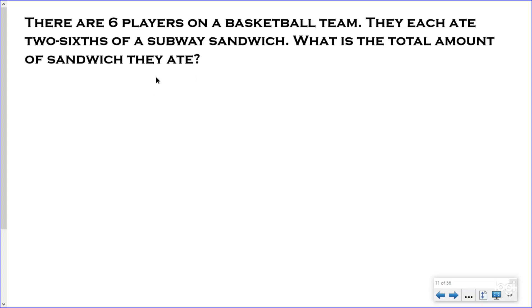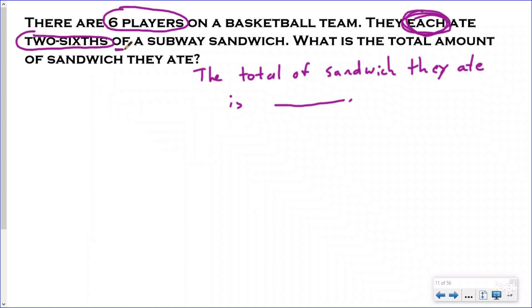So my statement is going to say the total amount of sandwich they ate is blank. When I go back into my word problems, I'm looking for anything about who the they are and anything obviously that they ate. So it says there are six players on a basketball team. They each, which I need to circle a thousand times. So each one of them ate 2/6 of, we always underline the word of after a fraction, a Subway sandwich. What is the total amount of sandwich they ate? So I'm going to annotate that with an addition sign because I know that I'm bringing things together and Dr. Bones is trying to dig up the total amount.